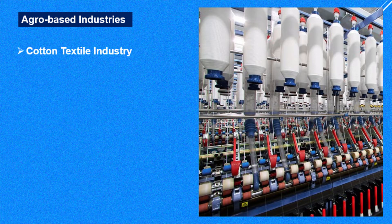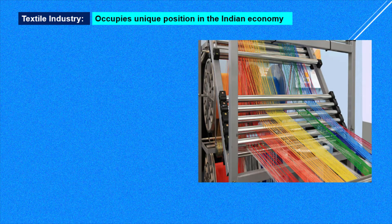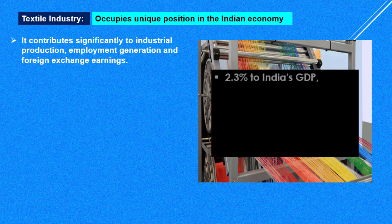Textile industries occupy a unique position in the Indian economy. The reason is it contributes significantly to industrial production, employment generation, and foreign exchange earnings, which are very much needed for the country. The textile industry contributes 2.3% to India's GDP, that is gross domestic product, which means the income coming from all the goods and services produced in the country.